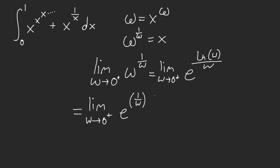So we have 1 over omega times ln of omega here. If we plug in 0, this is infinity and this is negative infinity, so we have e to the negative infinity. Technically, this limit converges and this limit is equal to 0, and that satisfies the bounds.